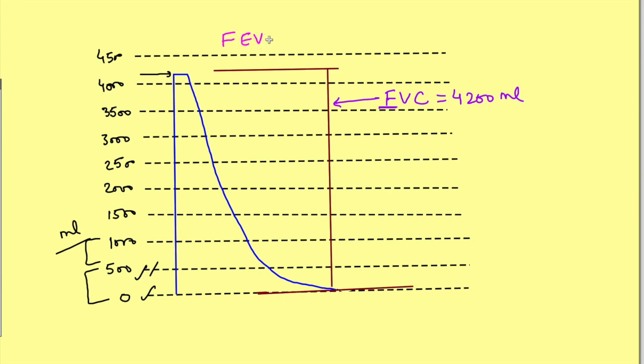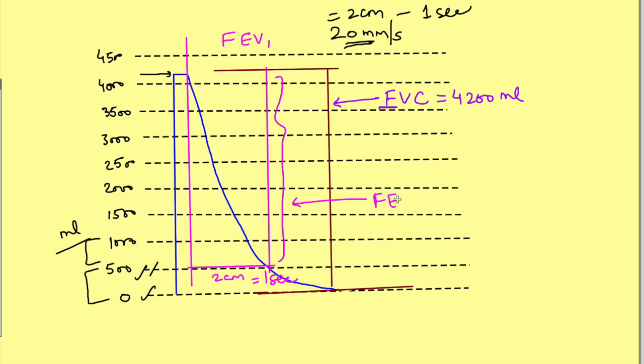FEV1 is forced expiratory volume in the first second - how much air is exhaled in the first second. We need to know the spirometer speed, which is 20mm per second. This means the graph moves 2cm in 1 second. Using a scale, we mark 2cm from the point where exhalation started. By dropping a perpendicular from the start of exhalation to this 1-second mark, we can determine the volume exhaled in the first second - approximately 3800ml.